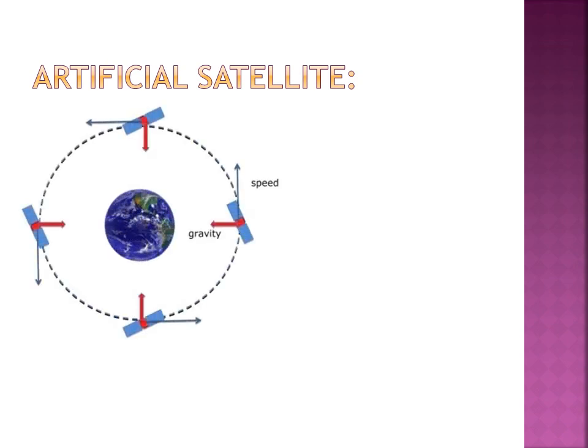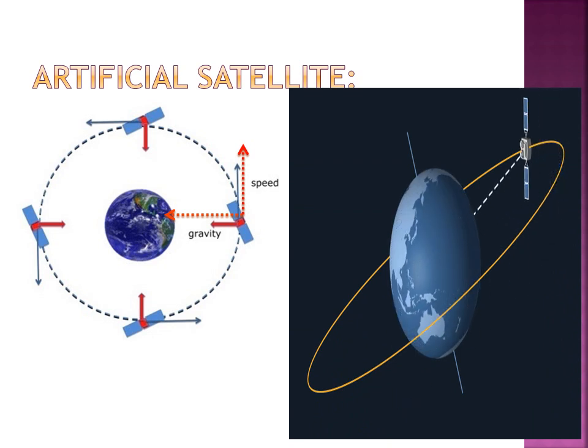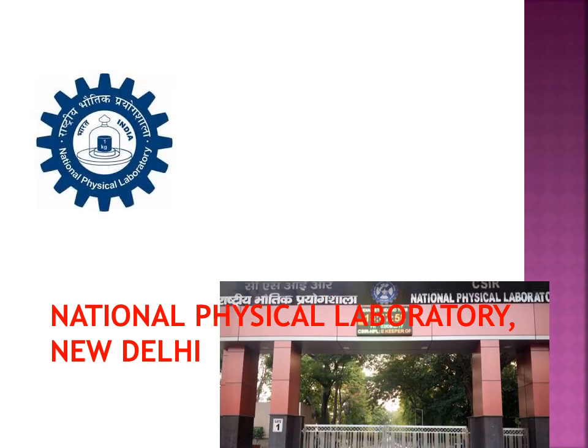Consider an artificial satellite moving around the earth in a circular orbit. The gravitational force acts along the radius of the circle while the displacement is along the tangent to the circle — these are perpendicular to each other. Therefore, the work done by the gravitational force on the satellite is zero.